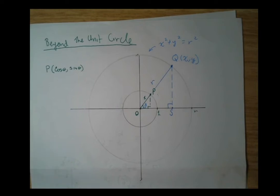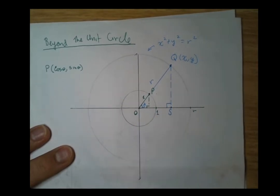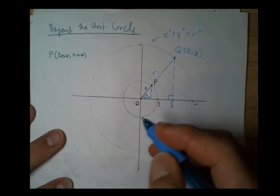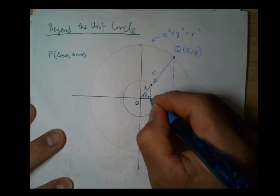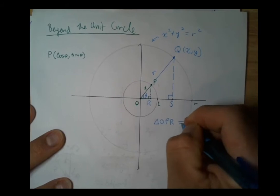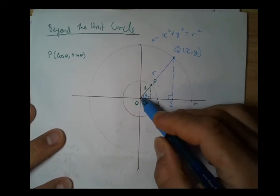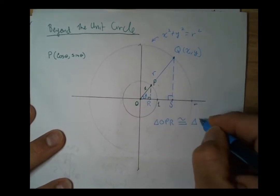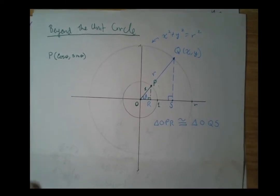We're going to use triangle similarity here. They're not equal—clearly two different sized triangles—but they are similar. This small triangle OPR is similar to the larger triangle OQS. When two triangles are similar, the ratio of their corresponding sides are equal.